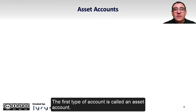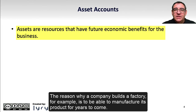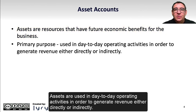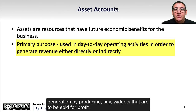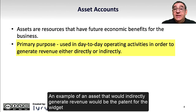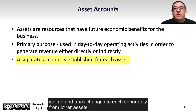The first type of account is called an asset account. Assets are resources that have future economic benefits for the business. The reason why a company builds a factory, for example, is to be able to manufacture its product for years to come. Assets are used in day-to-day operating activities in order to generate revenue either directly or indirectly. A factory contributes directly to revenue generation by producing widgets that are sold for profit. An example of an asset that would indirectly generate revenue would be the patent for the widget. A separate account is established for each asset so that we can isolate and track changes to each separately from other assets.